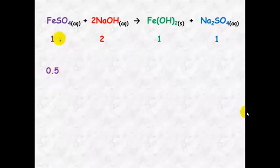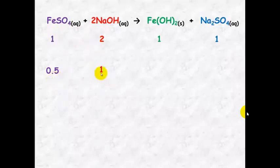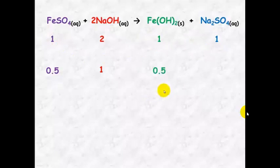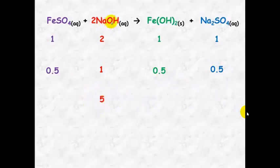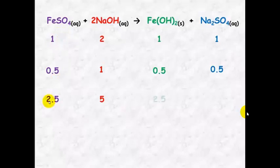So if we're told we have 0.5 moles of iron sulphate, we know that we will need to react that with double the amounts, because here we have a one to two ratio. So we will have one mole of sodium hydroxide reacting with 0.5 moles of iron sulphate. These are a one to one to one ratio, so you'll have 0.5 mole and 0.5 mole. If we're told that we have five moles of sodium hydroxide, we know that it reacts with half the amounts, so we will have 2.5 moles of iron sulphate, and that will also produce 2.5 moles of iron hydroxide and 2.5 moles of sodium sulphate. These ratios do not change.